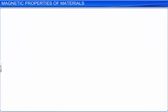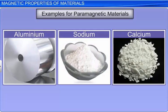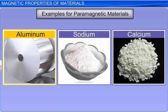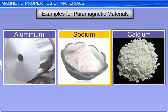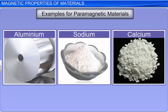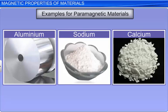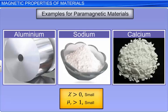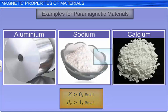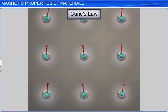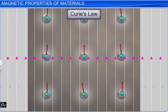Some examples of paramagnetic materials are aluminum, sodium, calcium, etc. The magnetic susceptibility of paramagnetic materials is small and positive. The relative magnetic permeability of these materials is slightly greater than 1. A paramagnetic material placed in an external magnetic field gets weakly magnetized.